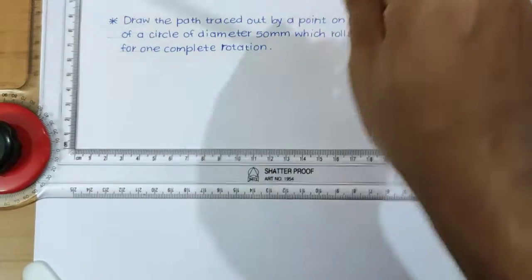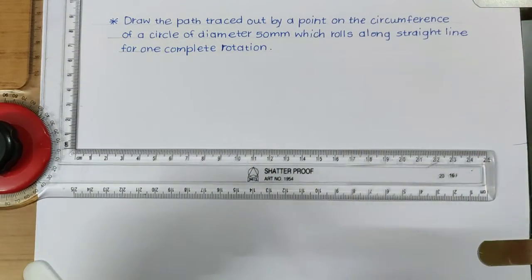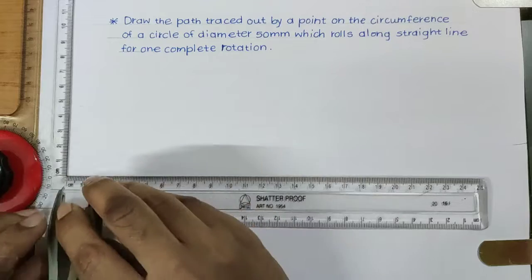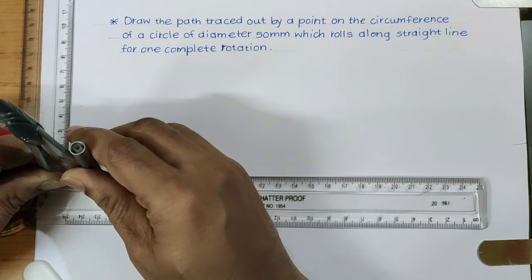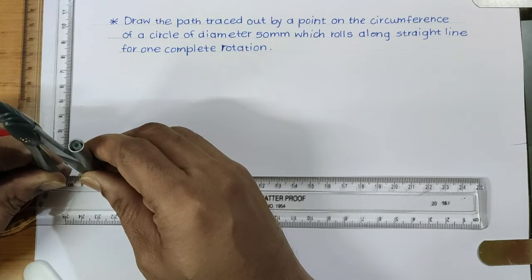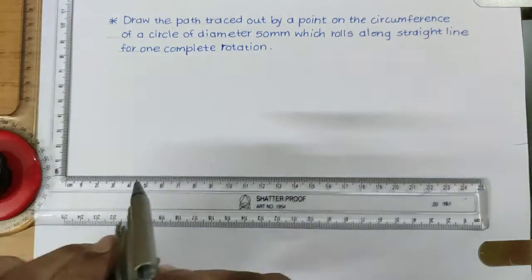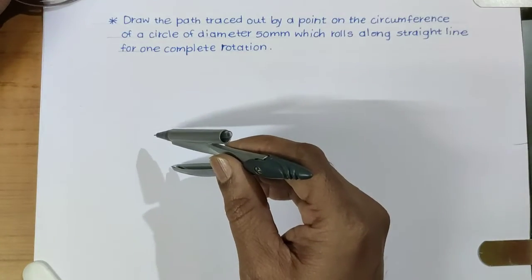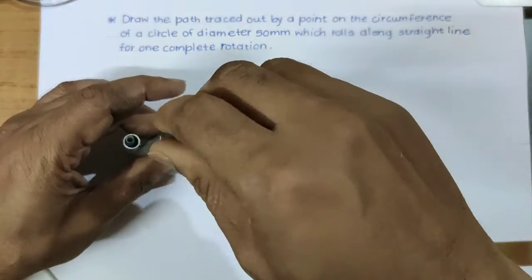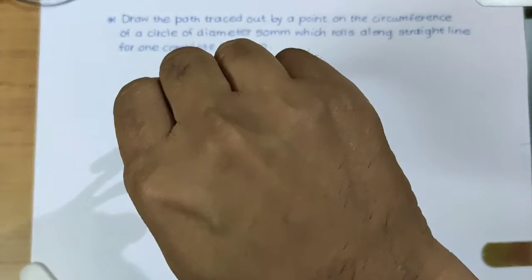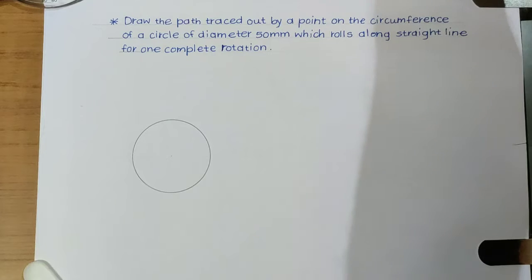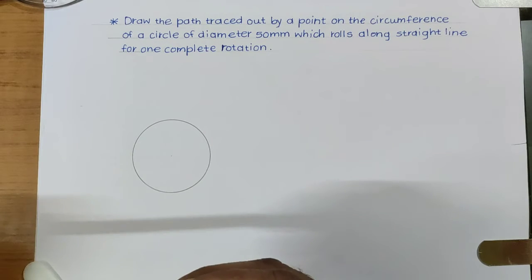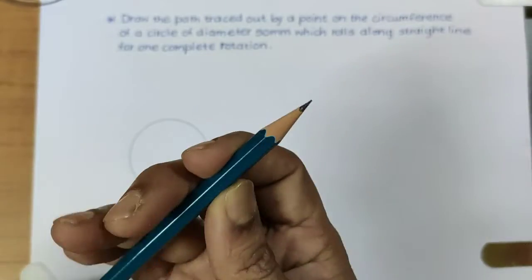Now how to solve this problem? First of all, draw a circle of the given diameter. The diameter given is 50 mm, therefore the radius is 25 mm. Take radius 25 mm in the compass, then draw the circle. After drawing the circle, divide it into 12 or 8 equal parts. Now let us divide this circle into 8 equal parts.